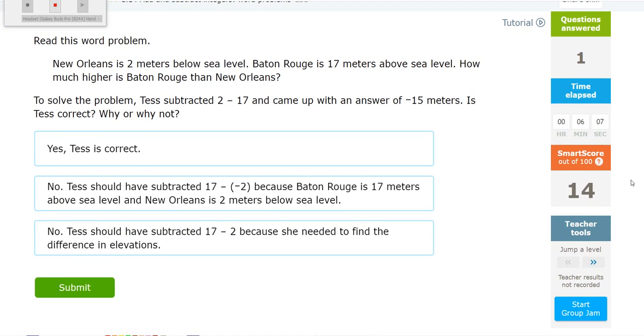New Orleans is 2 meters below sea level. Baton Rouge is 17 meters above sea level. How much higher is Baton Rouge than New Orleans? So they asked me how much higher. If they say how much, that again means I'm finding the distance or the difference, which means that this is definitely going to be subtraction.